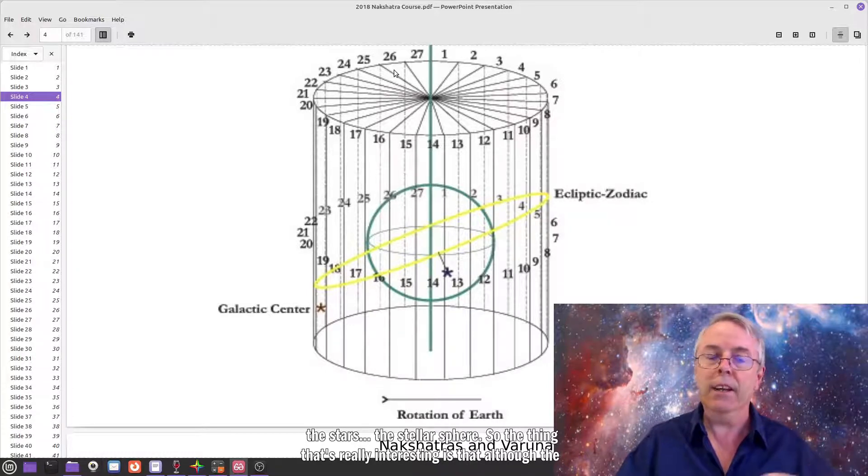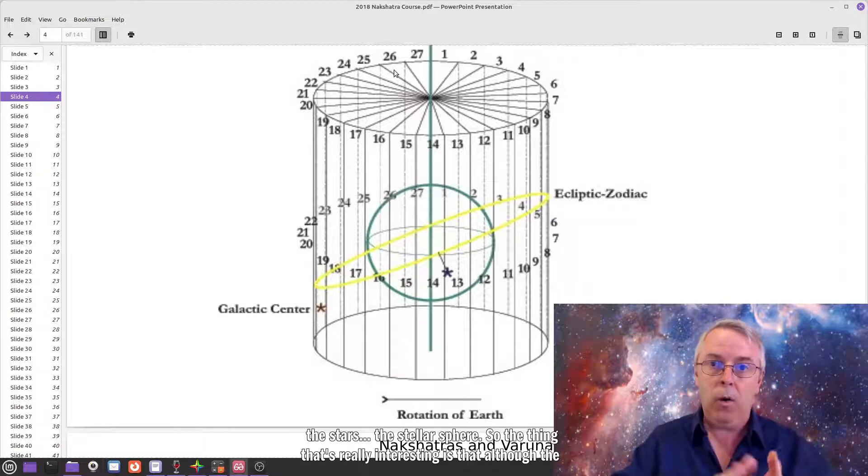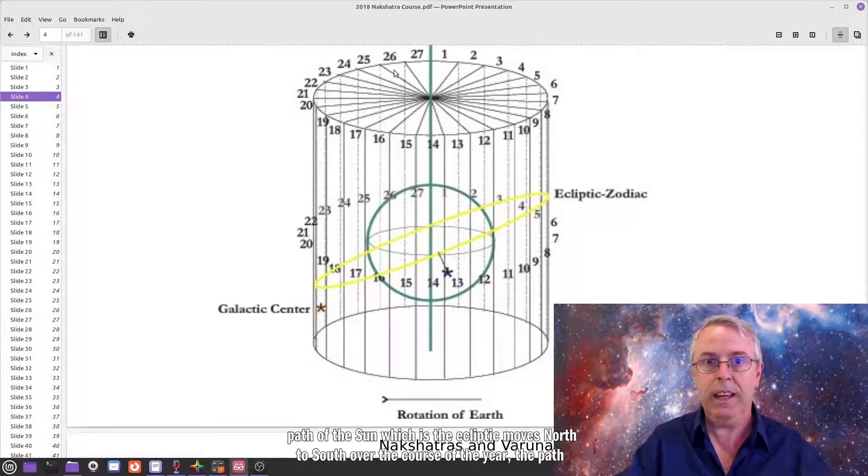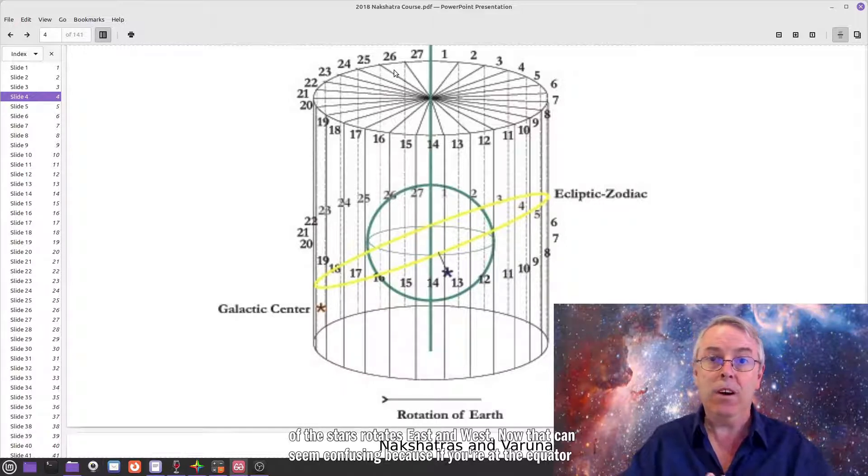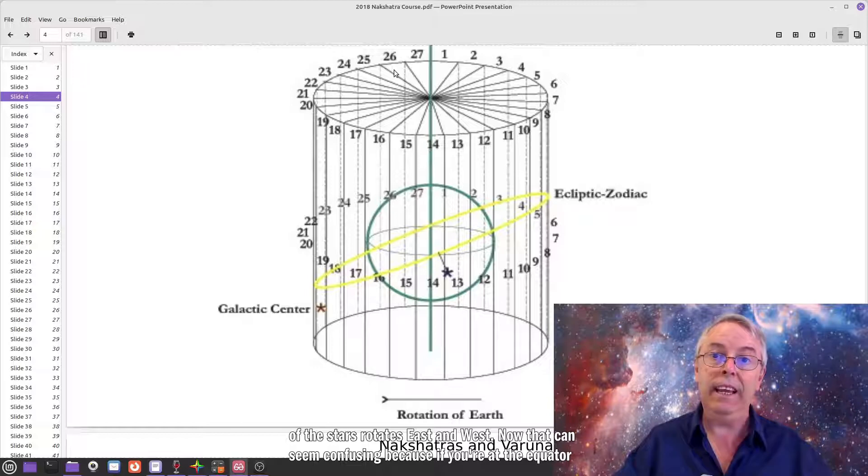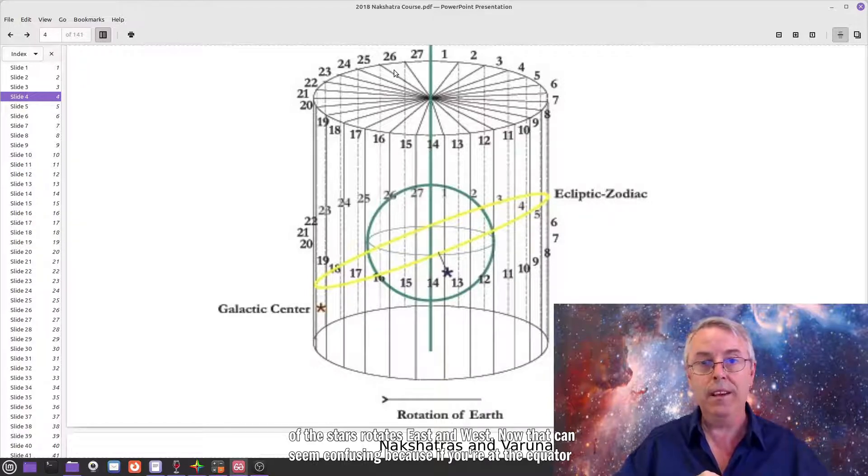So the thing that's really interesting is, although the path of the sun, which is the ecliptic, moves north to south over the course of the year, the path of the stars rotates east and west.